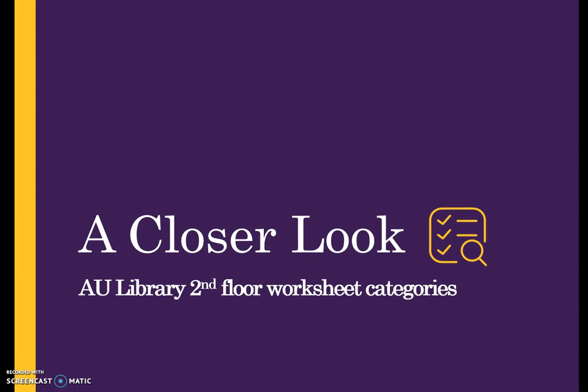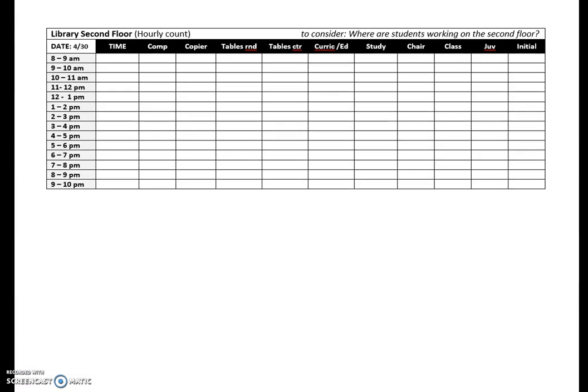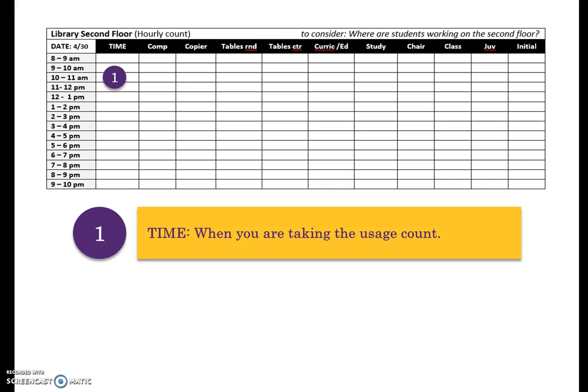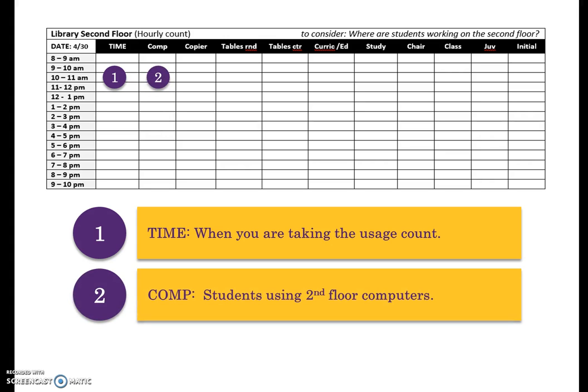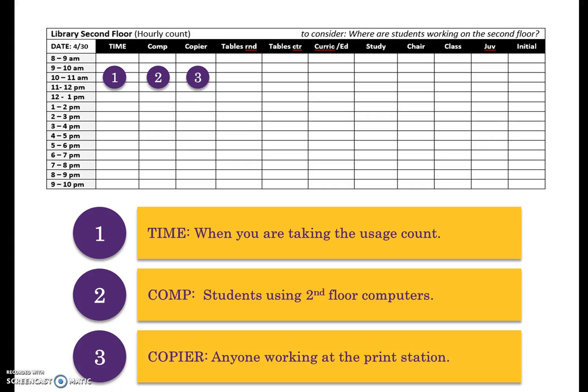Let's take a closer look at the library's second floor worksheet categories. Library second floor counts are taken once an hour, most often on the half hour. When walking around the second floor, these areas have been designated for data collection. Time: enter the time you are taking the count. Enter the number of users working at second floor computers. Detail anyone working at the copy or print station.